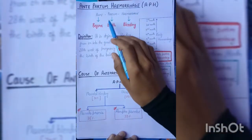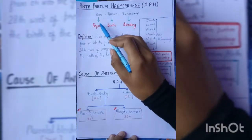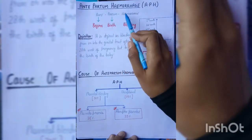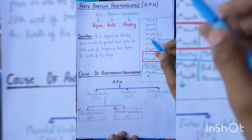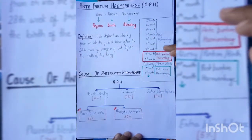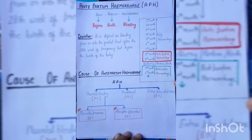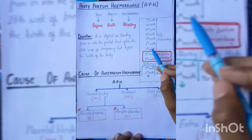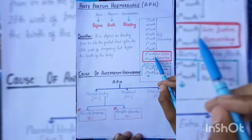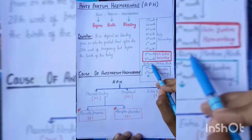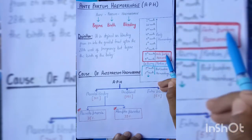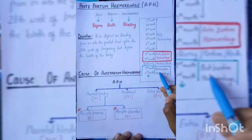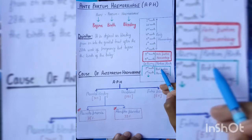Let's divide antepartum hemorrhage into three words: 'anti' means before, 'partum' means birth, and 'hemorrhage' means bleeding. So bleeding before birth is known as antepartum hemorrhage. Hemorrhage in pregnancy is of three types: early hemorrhage, antepartum hemorrhage, and postpartum hemorrhage. Early hemorrhage occurs from the first to seventh month; antepartum hemorrhage occurs after seven months and before delivery.